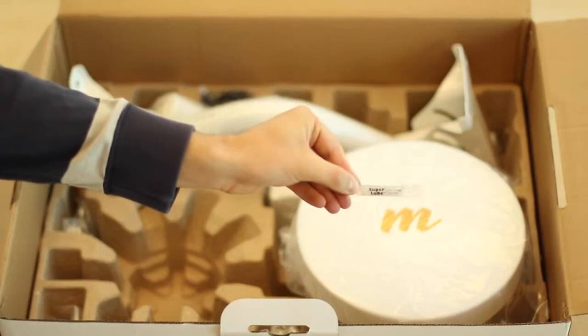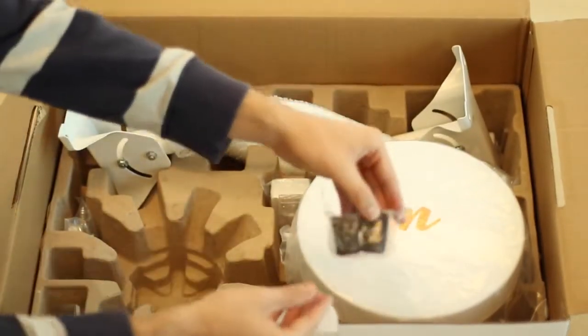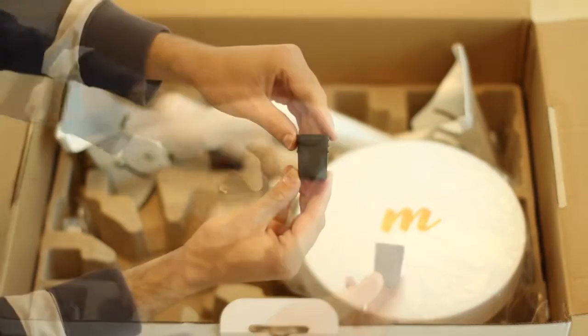The kit also comes with a small packet of synthetic lubricant used to protect the ethernet cable contacts from moisture. In another pocket, you will find the set of flexible ethernet glands used to protect the cables from weather.